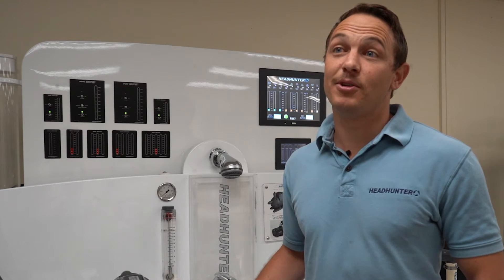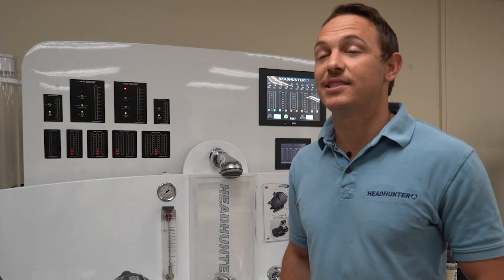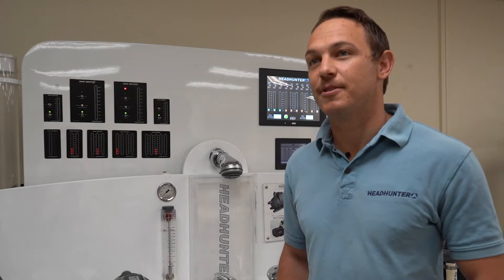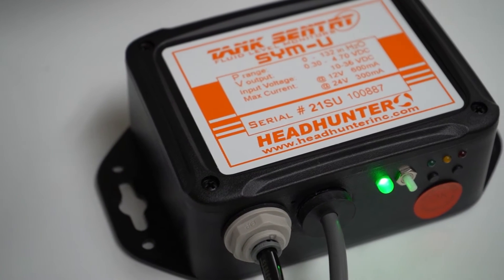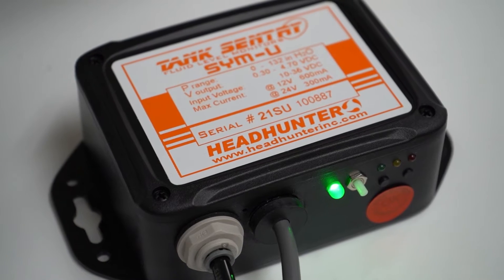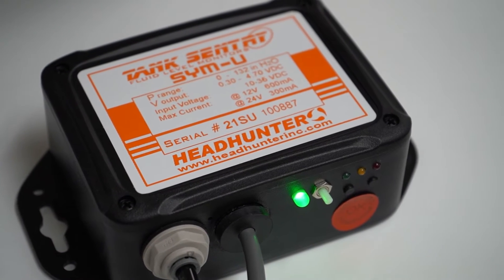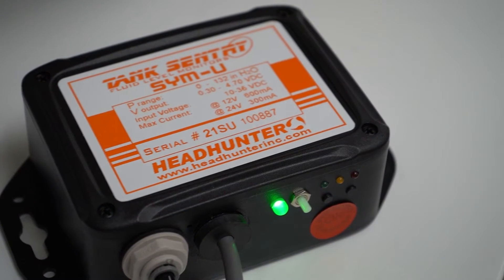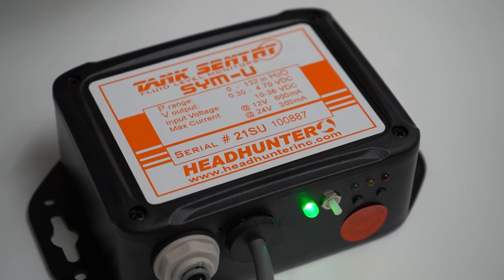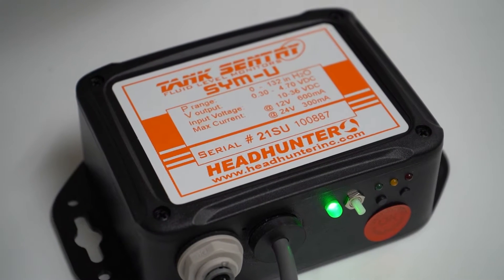This specific SIM-U calibration is calibrating the SIM-U to your tank depth. The Headhunter SIM-U is a tank level sensor that determines the fluid level by measuring the hydrostatic pressure of a column of fluid in a tank vented to atmosphere and converting the pressure into an analog signal voltage output.